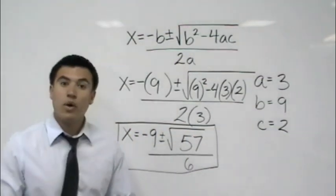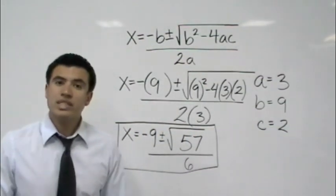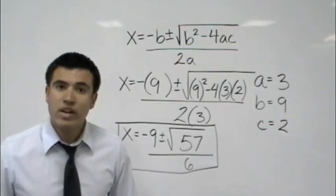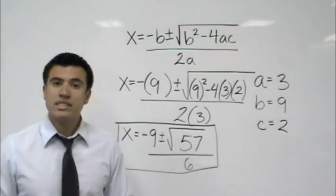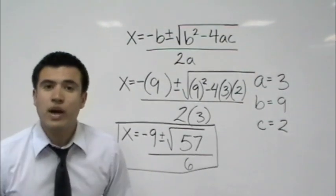And what helped? Knowing the song x equals negative b plus or minus square root b squared minus 4ac all over 2a. So let's go ahead and do a...